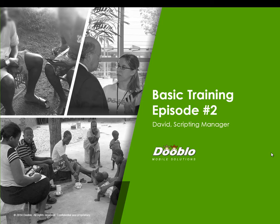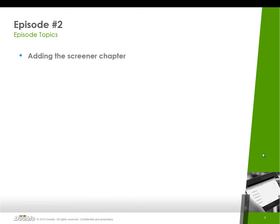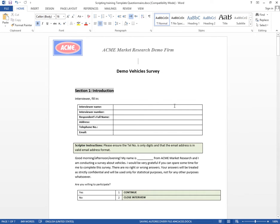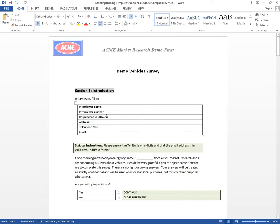Welcome to episode number two of the Survey To Go basic training. My name is David and I'm going to be your host. I'm one of the scripting managers here at Dublow. In this episode, we're going to add the screener chapter to our already existing survey. We are scripting the demo vehicle survey and we already did the intro section in our last episode.